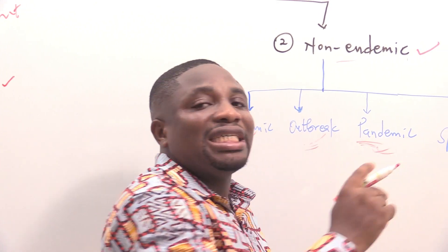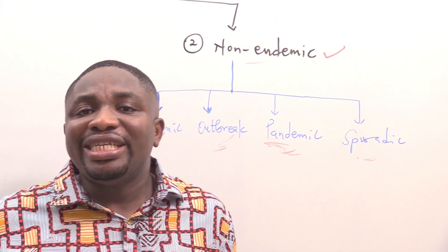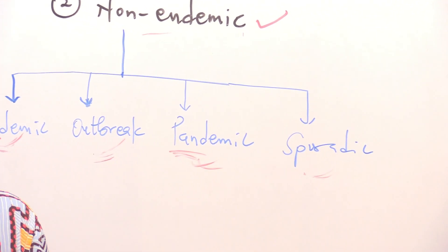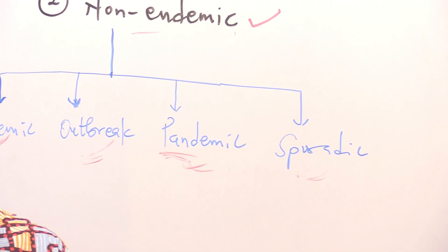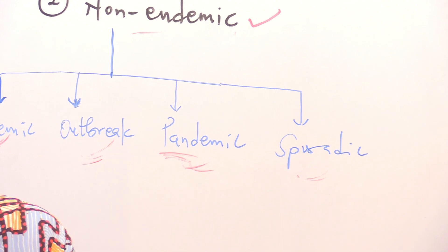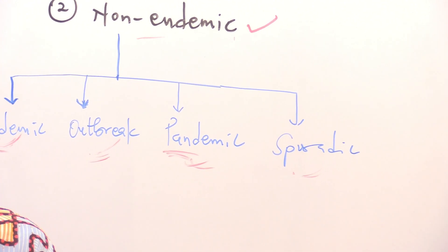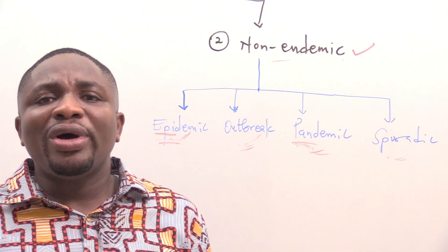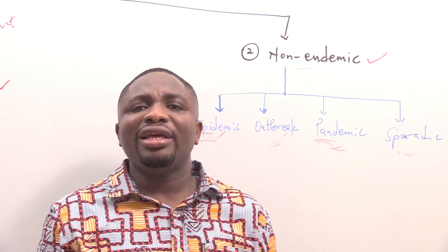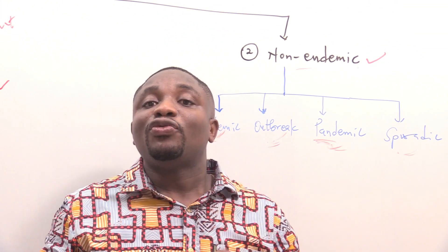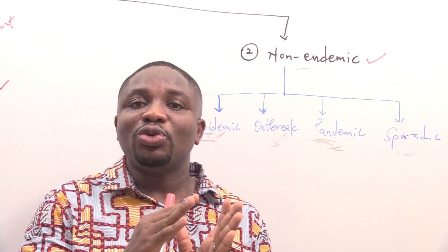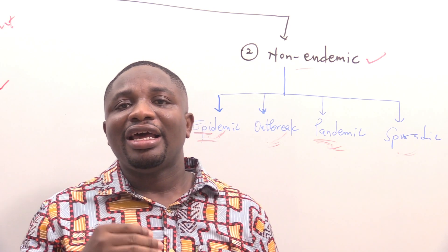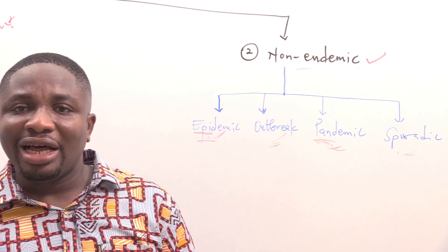Finally, sporadic. When we say sporadic, it refers to a disease or condition that occurs infrequently and irregularly. It means it does not have any constant presence — it barely happens and comes out of nowhere.